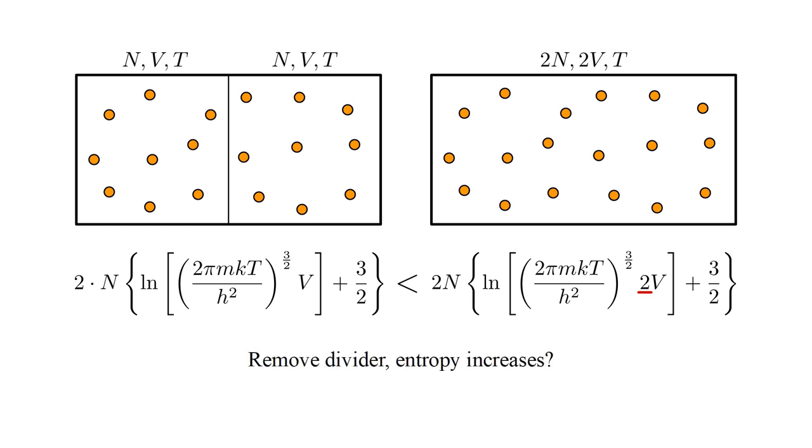This says that if we remove the divider, the entropy increases, which is a strange result. The local properties of the gas did not change. In both cases, the temperature is the same, the total number of atoms is the same, and so is the pressure. There does not seem to be any irreversible change taking place.